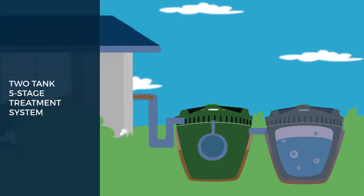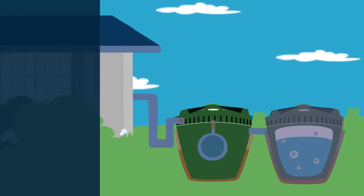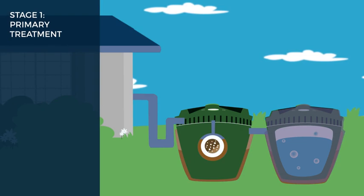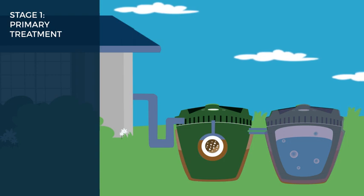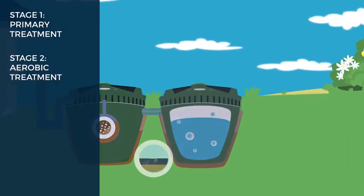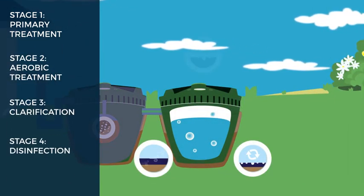Aquanova uses a two-tank, five-stage treatment system that provides cleaner and safer wastewater. The primary tank or settling tank is where wastewater settles to remove solids. The secondary or treatment tank is where treated water receives aerobic treatment, clarification and is disinfected.